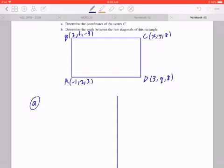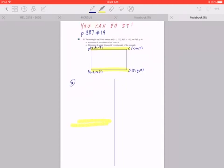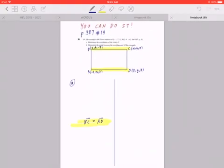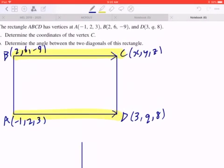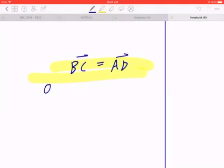What you can do is think about the two sides of this rectangle, specifically BC and AD. So if you think about the length or the magnitude of BC and AD, these are the same. So write down the fact that BC equals AD, meaning that they're equal vectors. Same magnitude pointing in the same direction.